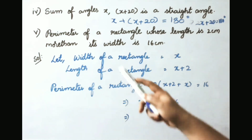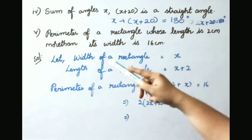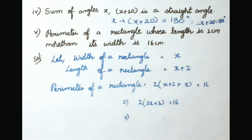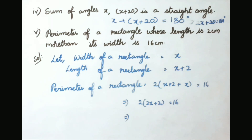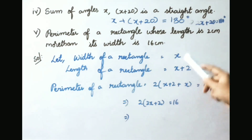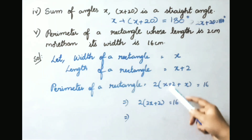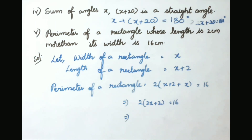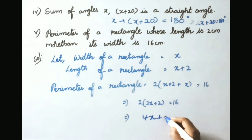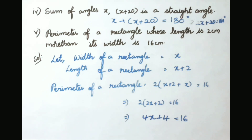Fifth: the perimeter of a rectangle whose length is 2 centimeters more than its width is 16 centimeters. Let width be x, so length is x plus 2. Perimeter equals 2 into (x plus 2 plus x) equals 16, giving 2 into (2x plus 2) equals 16. Multiplying out: 4x plus 4 equals to 16 is the simple equation.